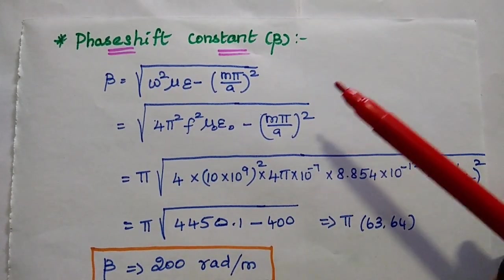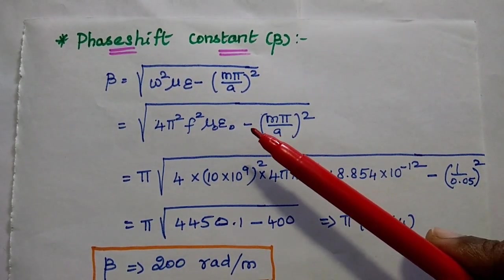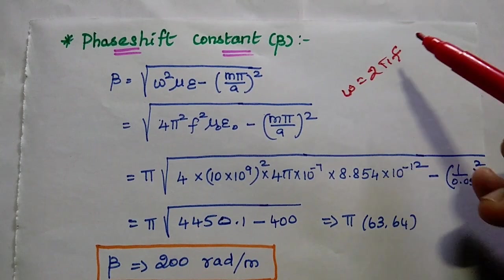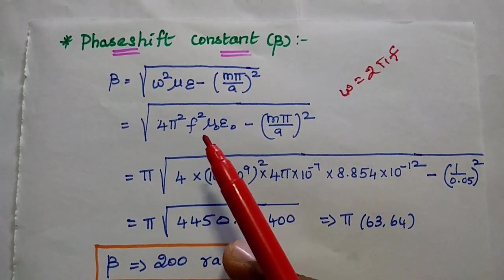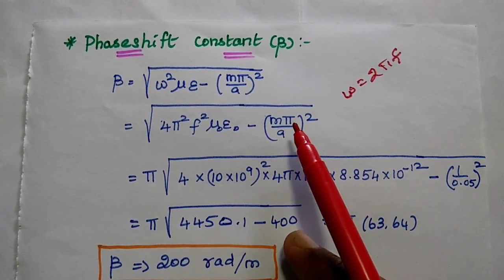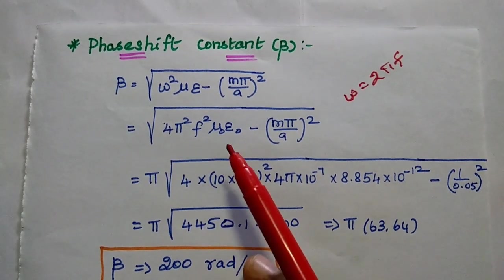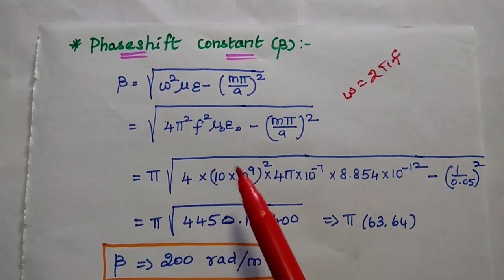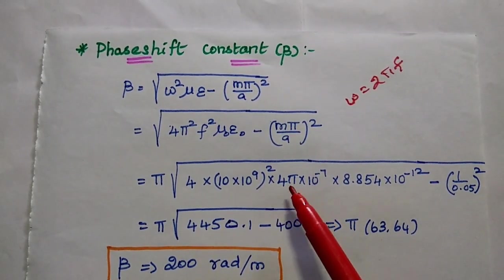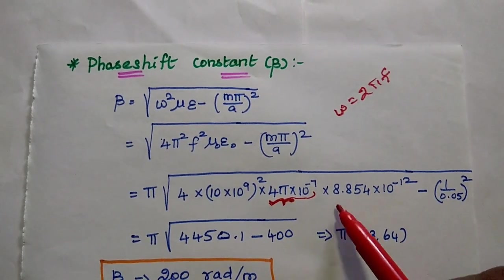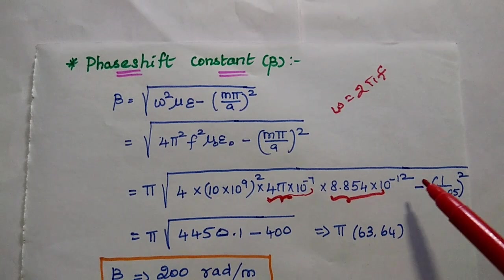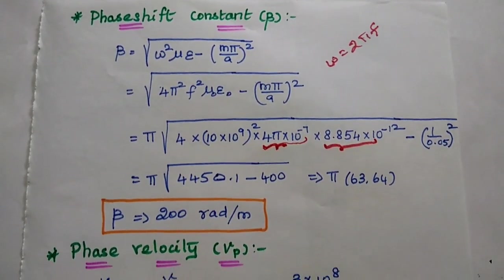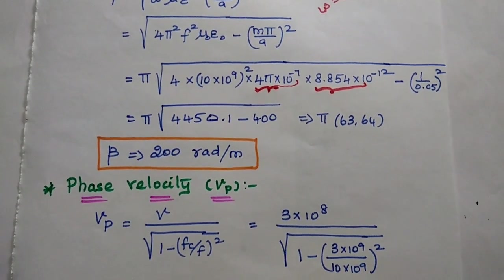Next, we find the phase shift constant. Beta equals square root of omega squared mu epsilon minus m by a, the whole squared. Here omega is 2 pi f. Writing omega squared as 4 pi squared f squared mu naught epsilon naught, we take pi as common from the square root. Substituting f squared as 10 into 10 to the power 9 squared, mu naught as pi into 10 to the power minus 7, epsilon naught as 8.854 into 10 to the power minus 12, and minus 1 by 0.05 squared, then simplifying, we get beta equal to 200 radian per meter.